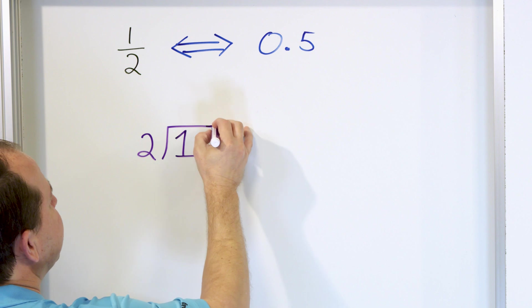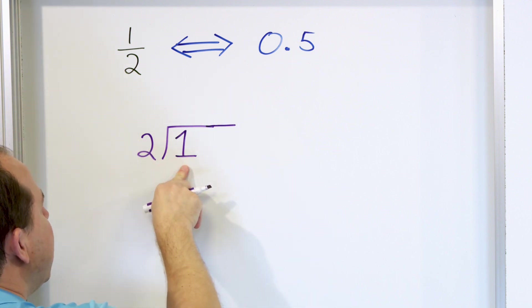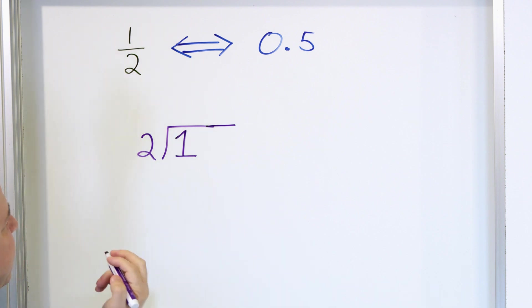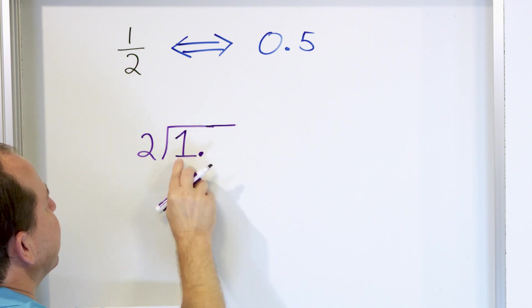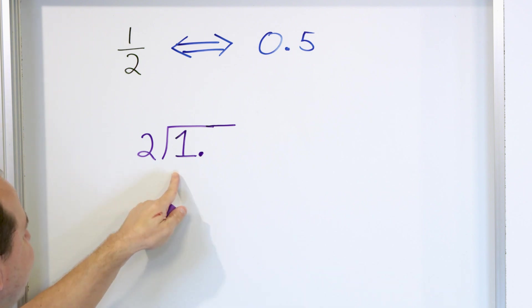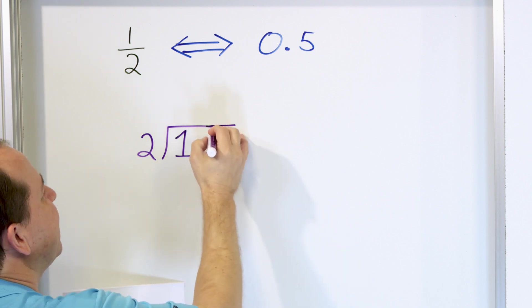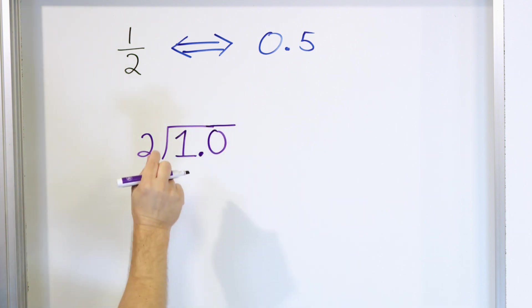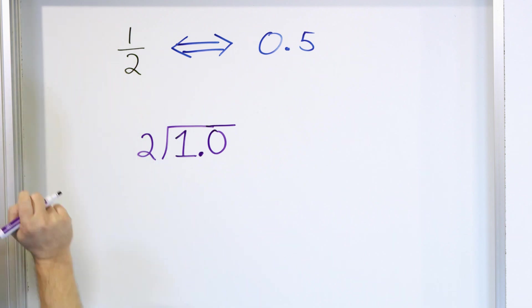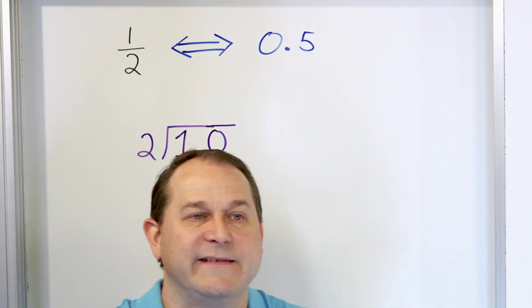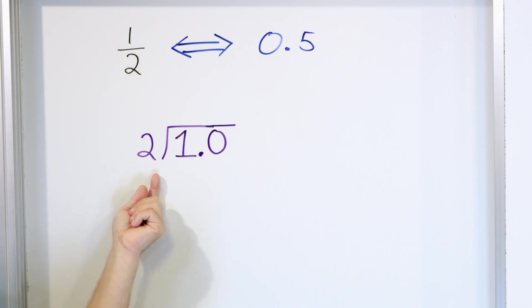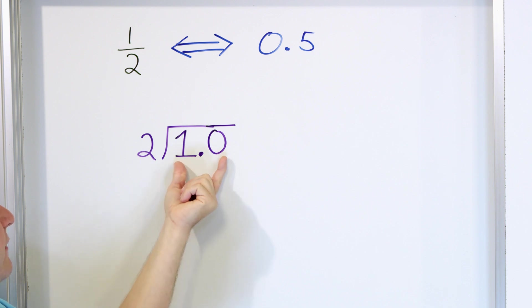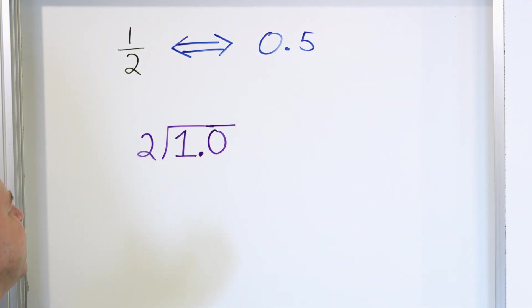We ask ourselves anytime we do division: can 2 divide into 1? The answer is no, because 1 is too small — it doesn't divide in. But don't forget that at every whole number there's always an invisible decimal point after it, so we're going to put that decimal here. Since we cannot divide 2 into 1, we're going to add a 0 after the decimal. Now 1.0 divided by 2 is the same thing as 1 divided by 2, because 1.0 is the same as just one whole — there is nothing after the decimal. Making it 1.0 doesn't change the problem at all.